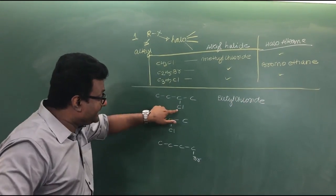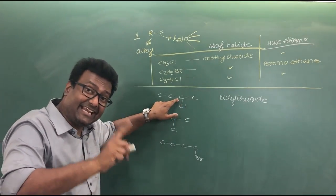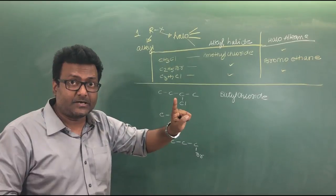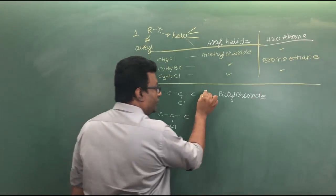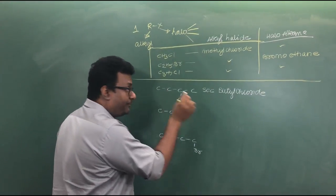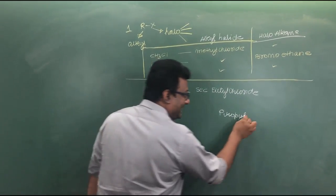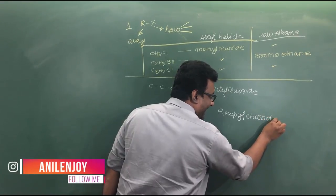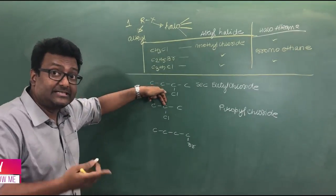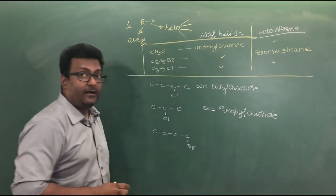The chloride is on a carbon atom which is a secondary carbon atom — a carbon connected to two other carbon atoms. So this is called sec-butyl chloride. Similarly, for a propyl chain where the functional group Cl is attached to a carbon connected to two other carbons, this is also sec-propyl chloride.